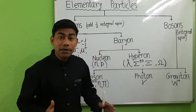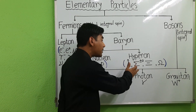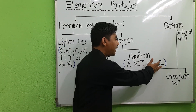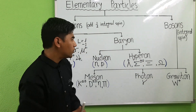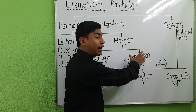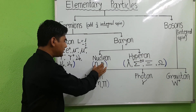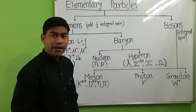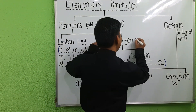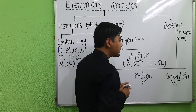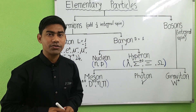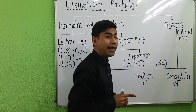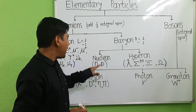Examples of hyperons are: lambda particle (lambda 0), sigma particle (sigma plus, sigma minus, sigma 0), cascade particle, and omega particle. A baryon number B equals to 1 is assigned to baryons, and B equals to minus 1 for anti-baryons such as anti-proton and anti-neutron.